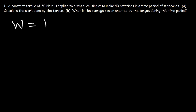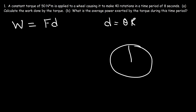Work is force times displacement, and linear displacement is equal to angular displacement times the radius. So if you have a circle with angular displacement theta, the linear displacement is the distance around the circle that you travel. Linear displacement is measured in meters; angular displacement is measured in radians.